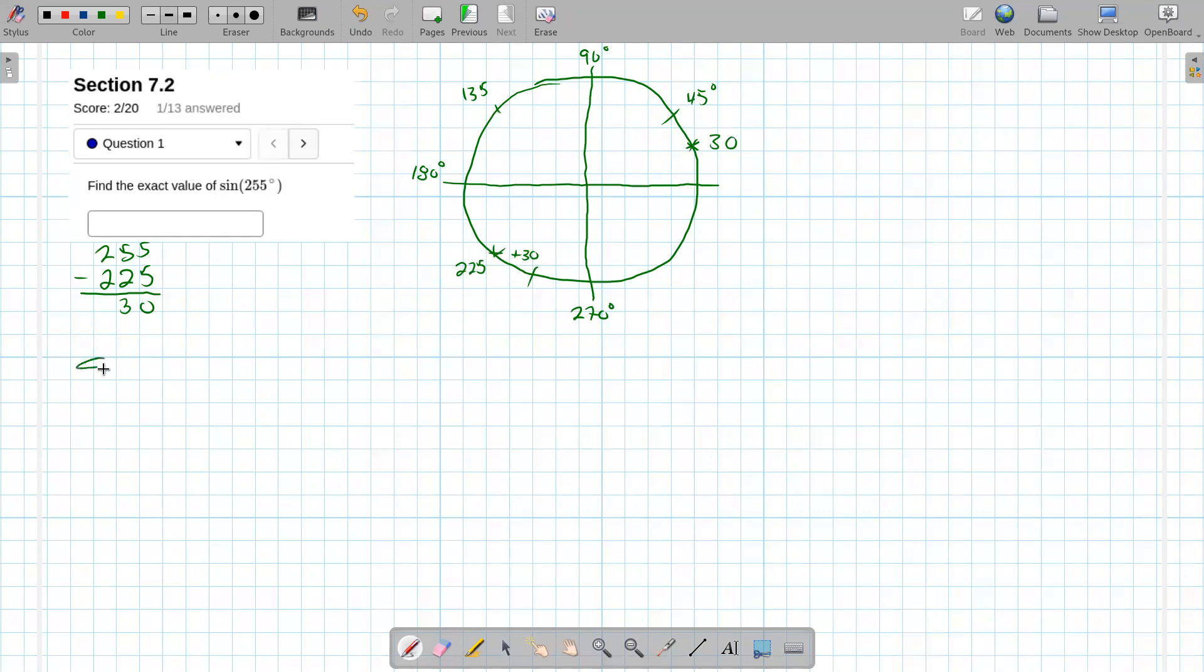So what I have then is the sine of 255 is equal to the sine of 225 plus 30, right? Because 255 is 225 plus 30. So what we're trying to do is take angles we know and use those to figure out angles we don't know yet.